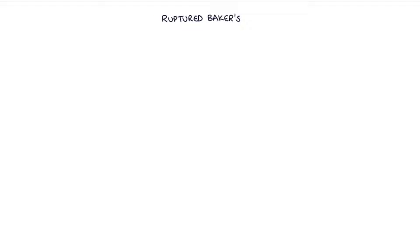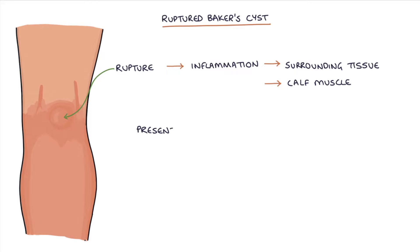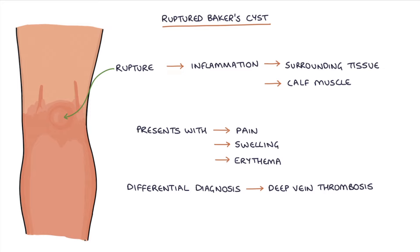A Baker's cyst can rupture if the pressure is large enough. A ruptured Baker's cyst will cause inflammation in the surrounding tissues and the calf muscle, presenting with pain, swelling, and erythema or redness. A critical differential diagnosis of a ruptured Baker's cyst is a deep vein thrombosis or DVT. A ruptured Baker's cyst can rarely also cause compartment syndrome.